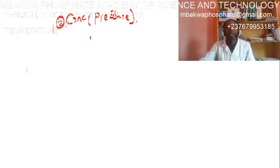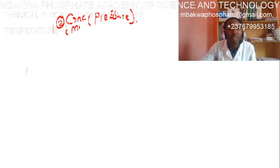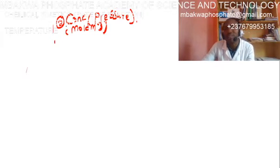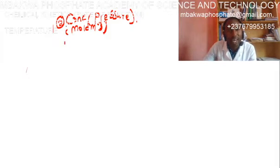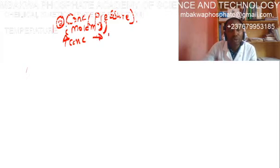Number two is concentration or pressure. Concentration is measured in moles per dm³. When we talk about concentration, this is for gaseous reactions and reactions taking place in solution. If we increase the concentration of the reactant, it will lead to an increase in the rate of reaction.